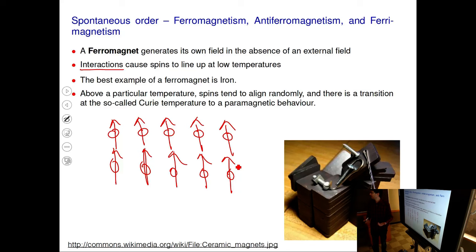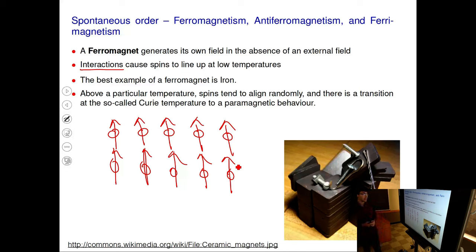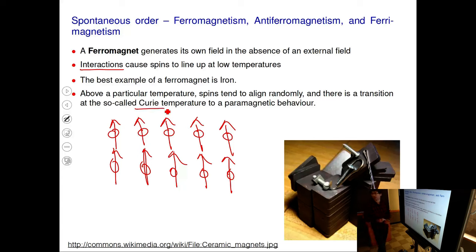This magnetic order is due to interactions between spins characterized by an energy scale. If you increase temperature, this order will be destroyed — spins will randomize because they have enough thermal energy to overcome the coupling energy. Below a certain temperature it becomes favorable to line all spins up in the same direction. For a ferromagnet, that temperature is called the Curie temperature, after Pierre Curie.